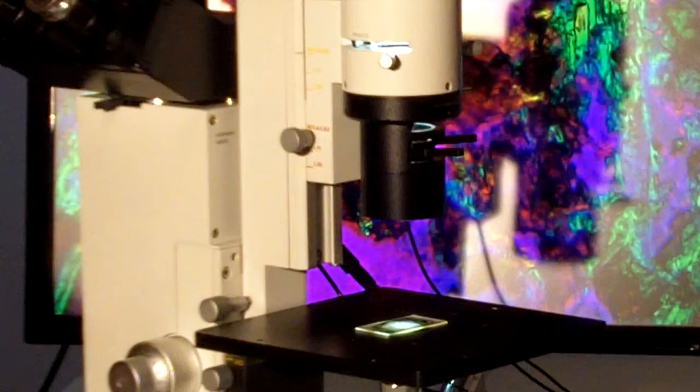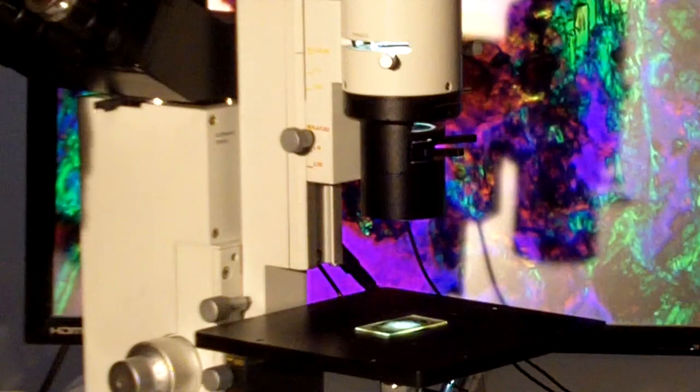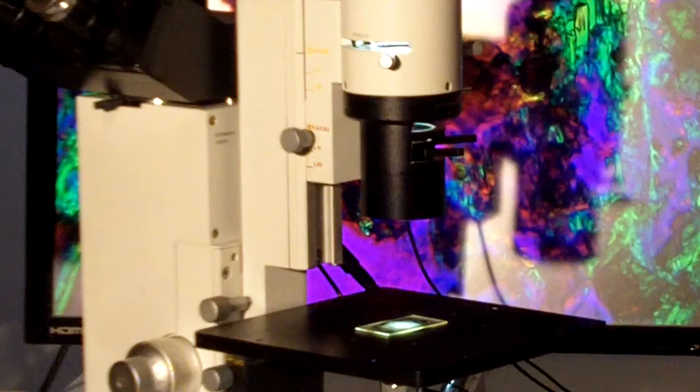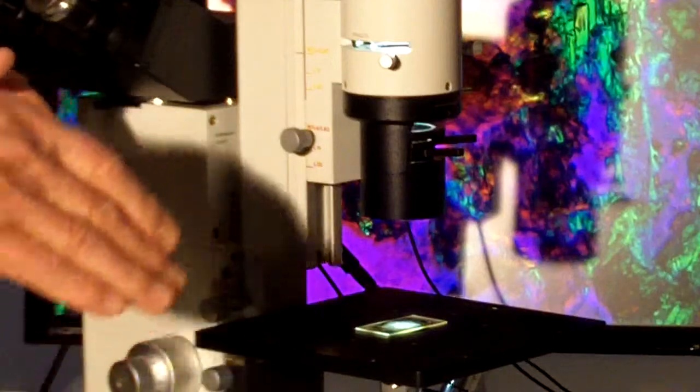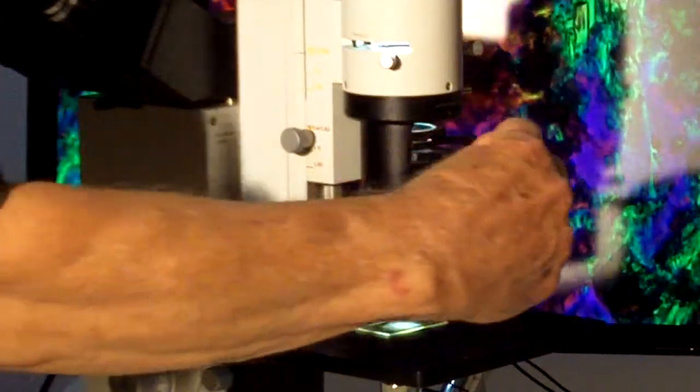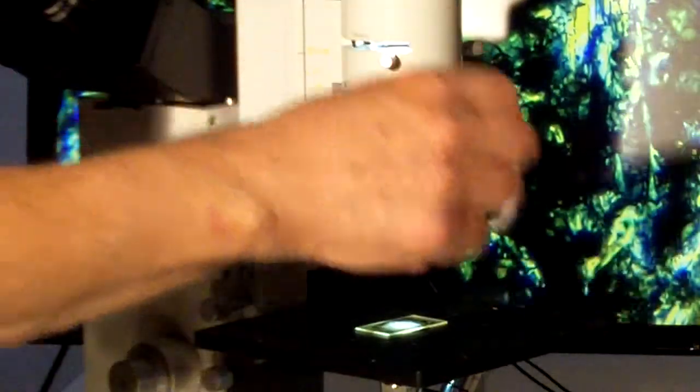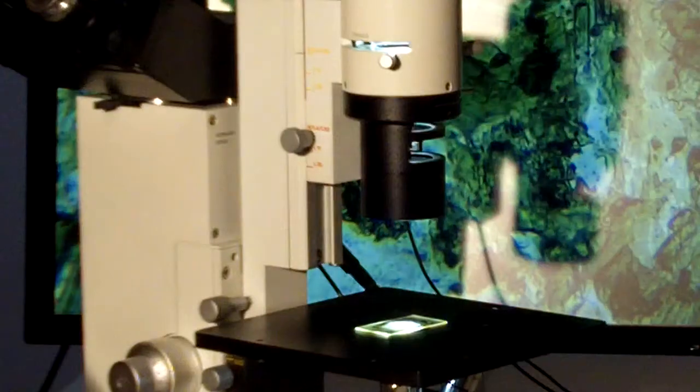These are all accessories that can be provided for using the Leitz Diavert microscope. Bright field, even dark field. So if we want to look at this in dark field, we can remove all the polarizing components. Polarizer, first order red.